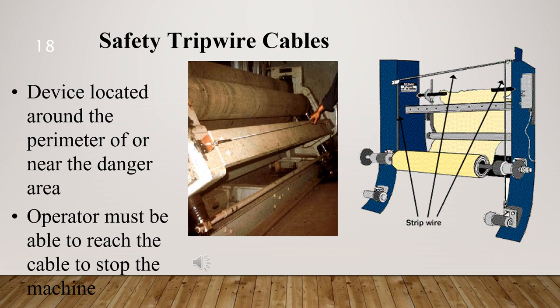In this part, we will learn about safety trip controls. Safety trip controls provide a quick means for deactivating the machine in an emergency situation. A pressure-sensitive body bar, when depressed, will deactivate the machine. If the operator or anyone trips, loses balance, or is drawn toward the machine, applying pressure to the bar will stop the operation.